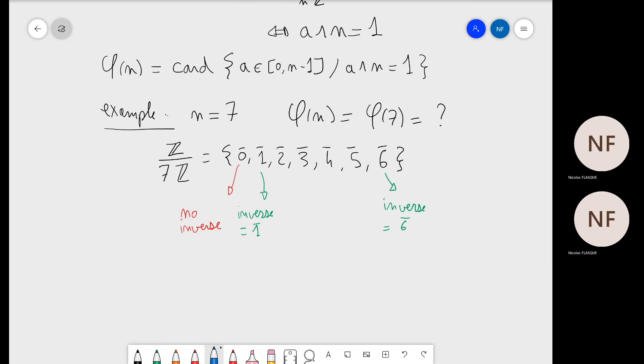Also, n minus one bar is always its own inverse. For all the other elements, we must check if this element has an inverse using the gcd between the element and the value of n, which is seven here.